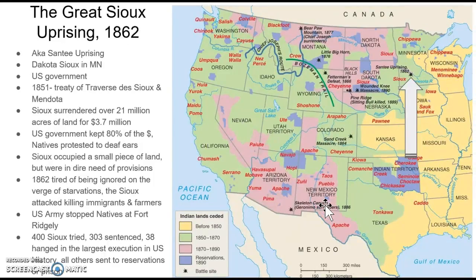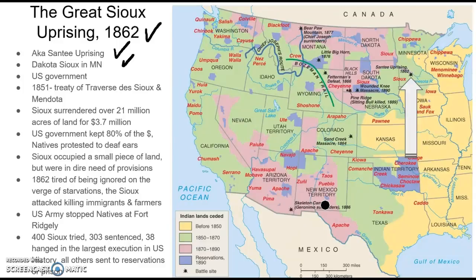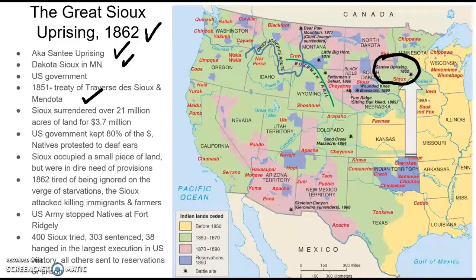The first conflict we're going to talk about is called either the Sioux Uprising or the Santee Uprising. It takes place in Minnesota — what becomes known as the Dakota Sioux. In 1851, the Sioux who had lived there signed a treaty with the U.S. government, known as the Treaty of Traverse des Sioux and Mendota. In the treaty, the Sioux agreed to surrender 21 million acres of land in exchange for $3.17 million.